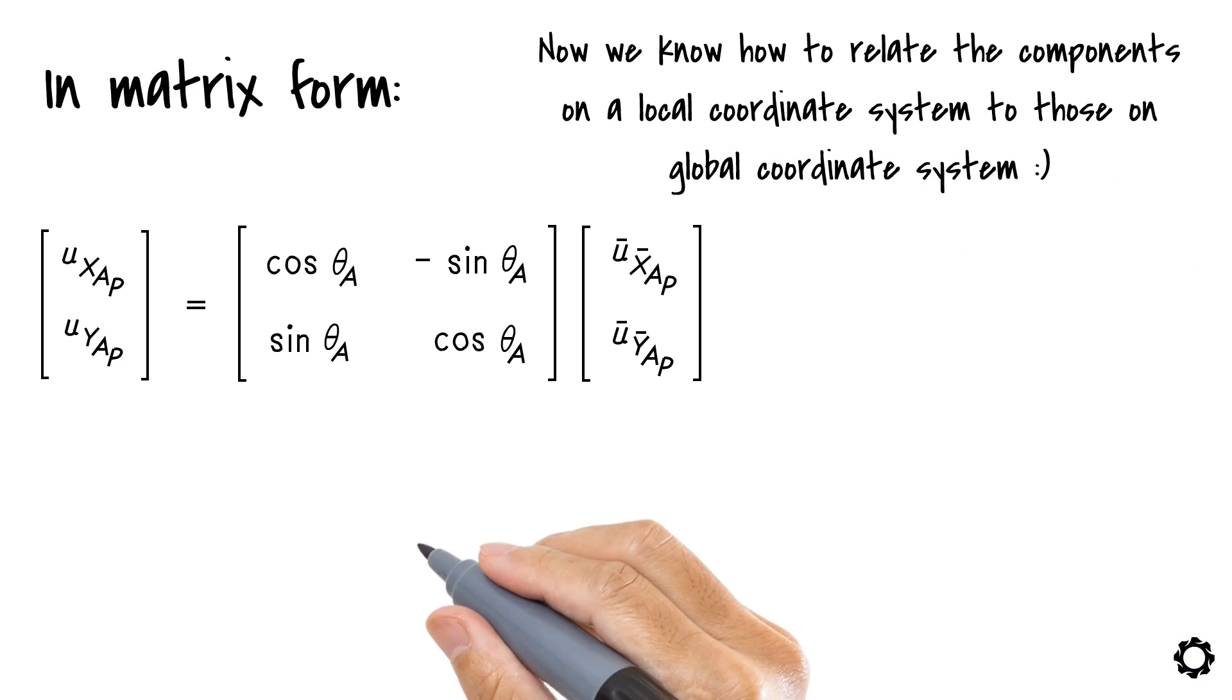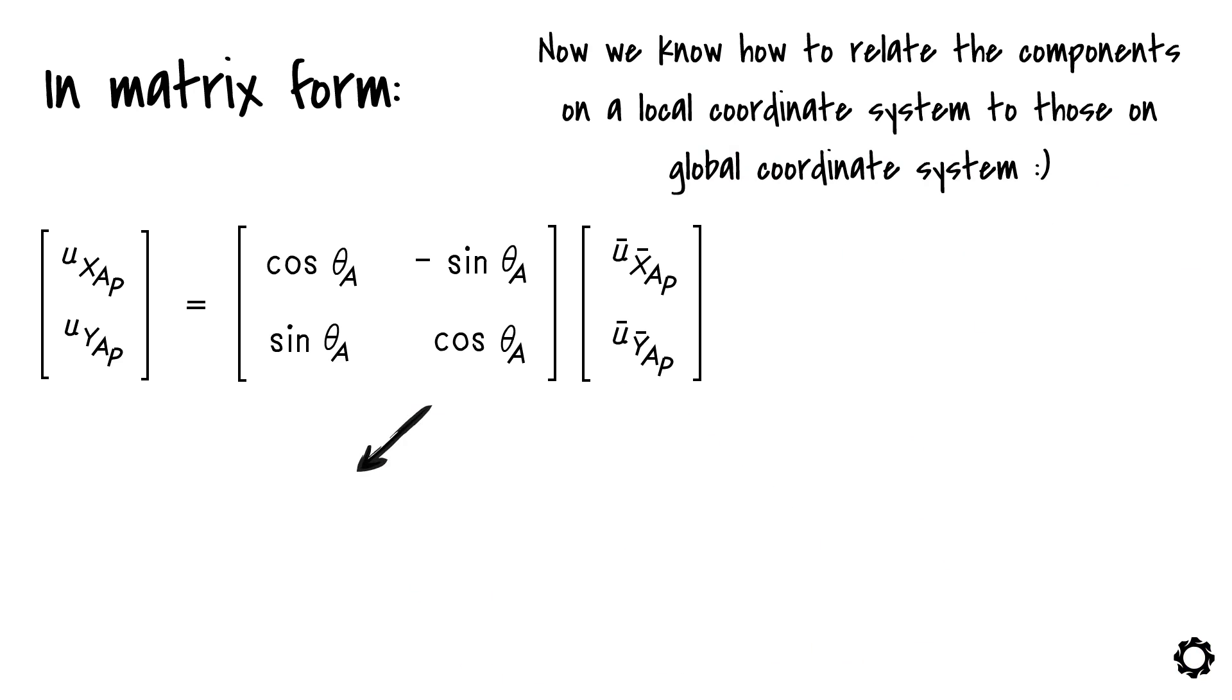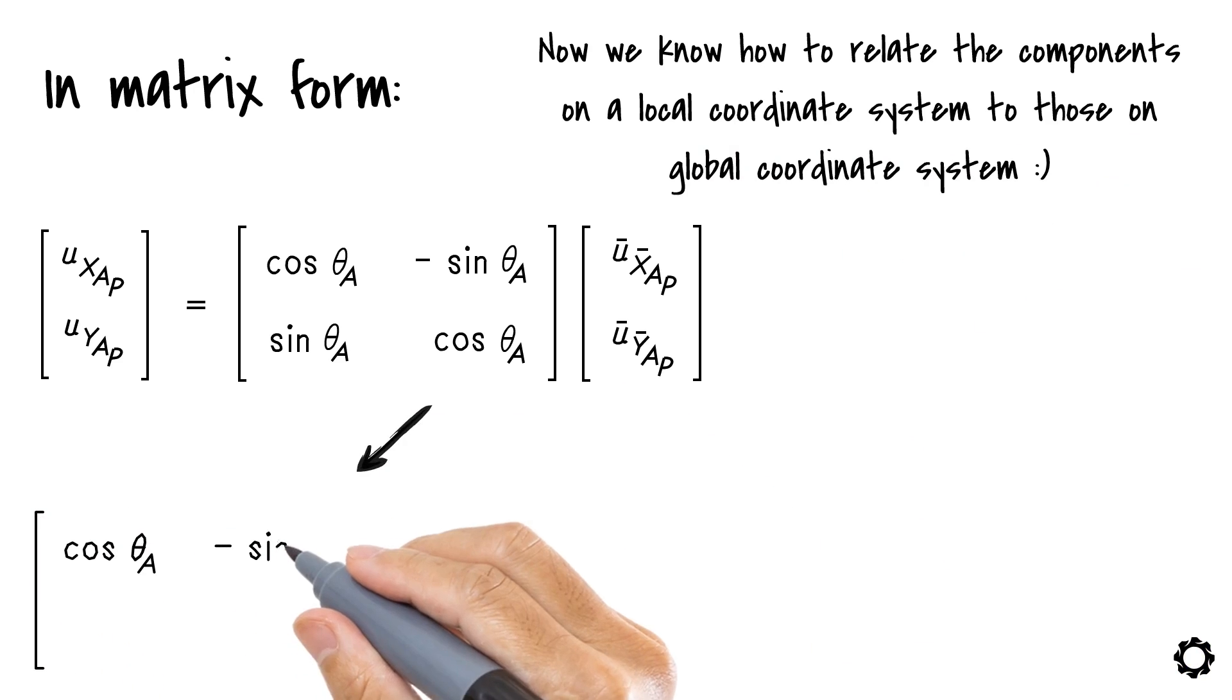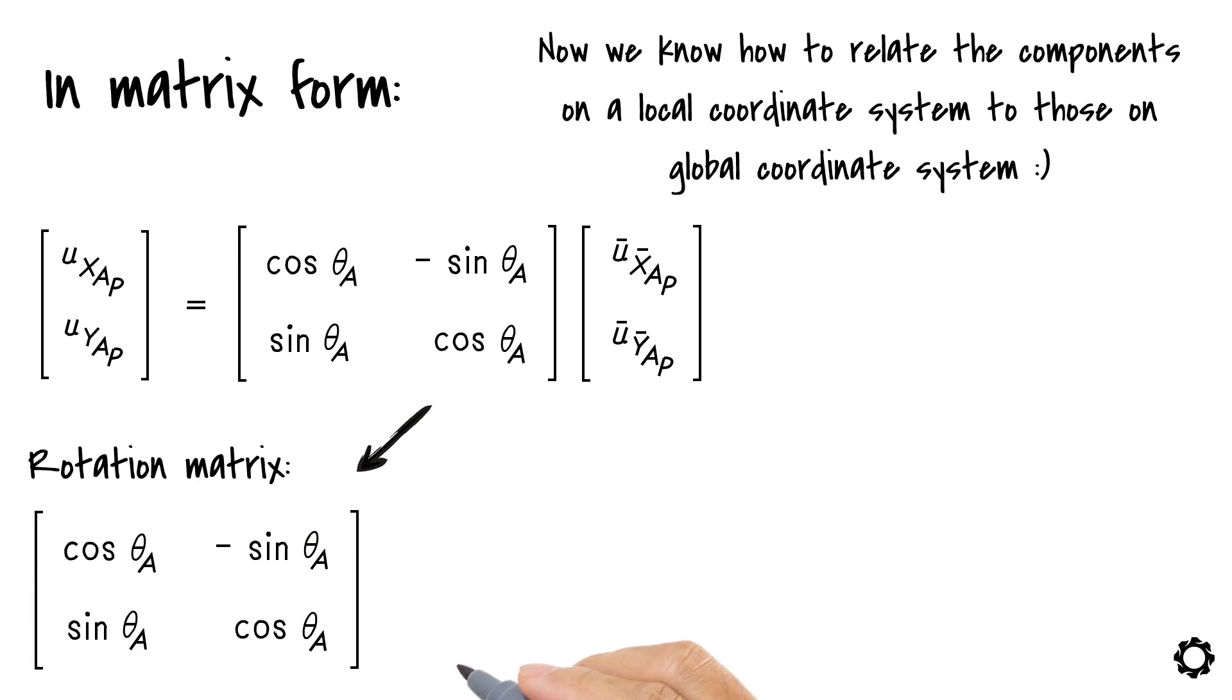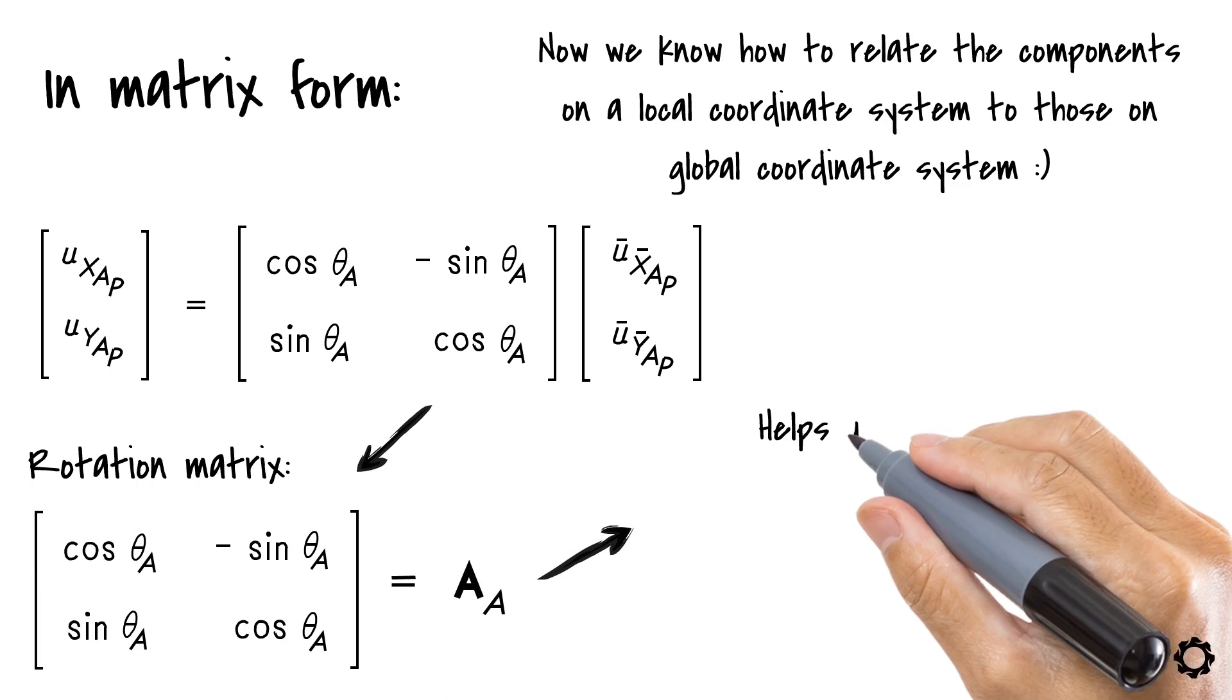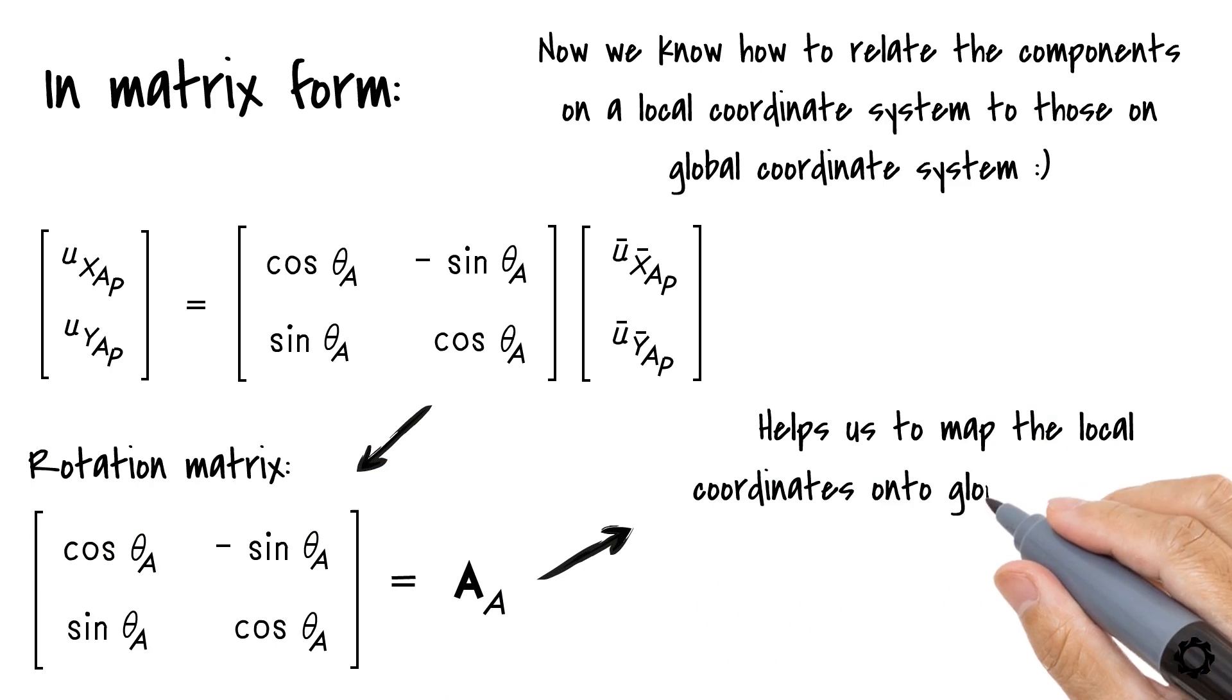But before we finish, take a look at the matrix. [cos(θ_a), -sin(θ_a); sin(θ_a), cos(θ_a)]. This matrix is known as the rotation matrix. We will be calling this the matrix A_a. This matrix helps us to map the local coordinates onto global coordinates.